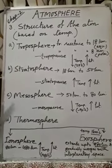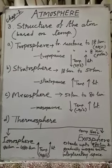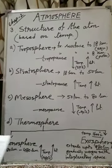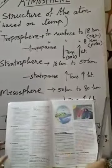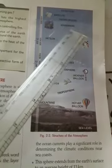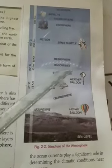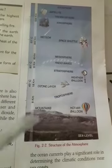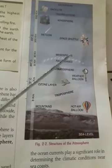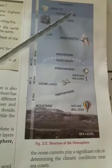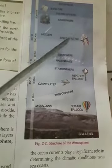I want to show you one thing - one diagram has been given based on the structure of atmosphere. In the book, it shows radio waves forming in the mesosphere layer, which is not correct - that is wrong. Just now I said radio waves are found in the ionosphere layer, because of the presence of ions. So when you will practice this diagram, you will draw these radio waves in the ionosphere layer, not mesosphere.